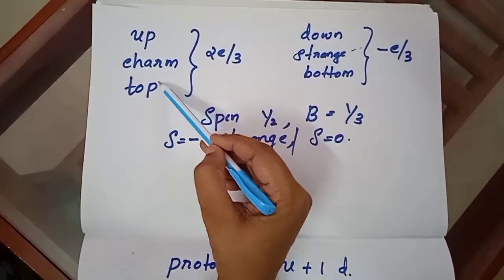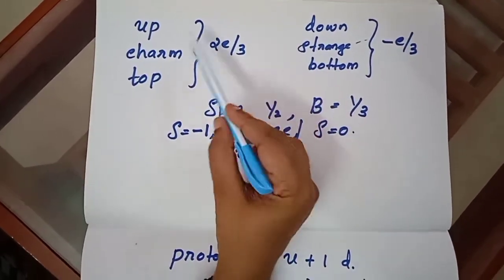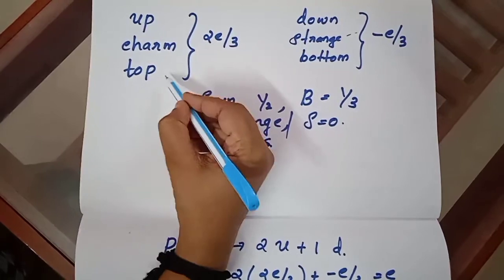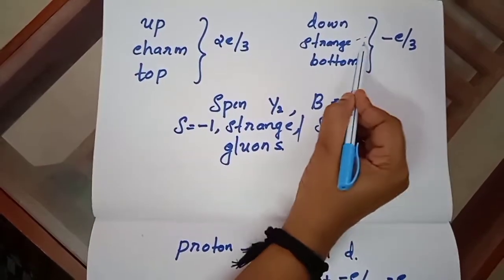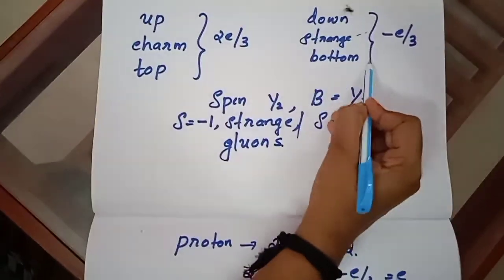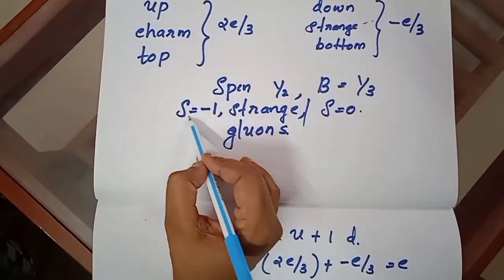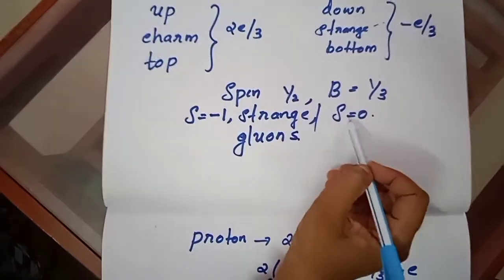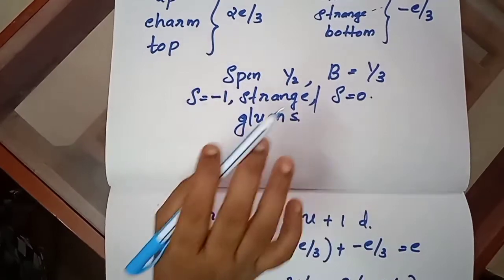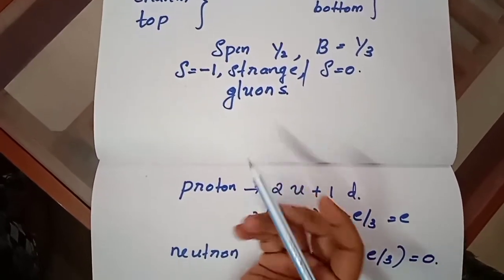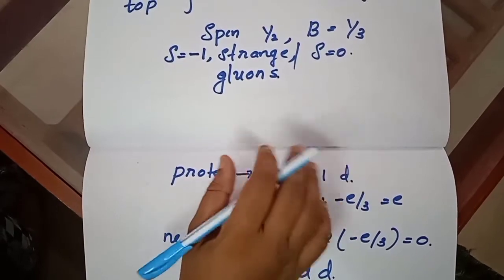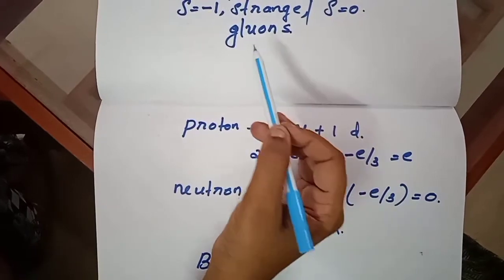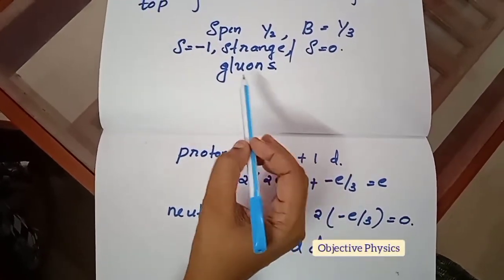All quarks have spin number 1/2 and baryon number 1/3. The strangeness number is -1 for strange quarks, and zero for all other quarks. There are four fundamental forces acting between quarks: strong, electromagnetic, weak, and gravitational. The quantum of the strong force is called the gluon.